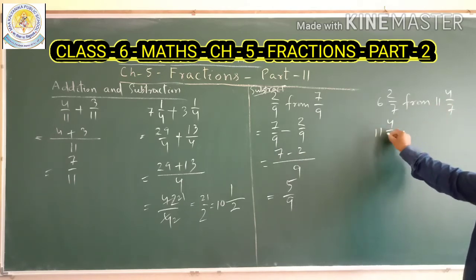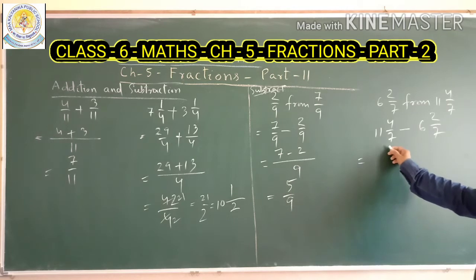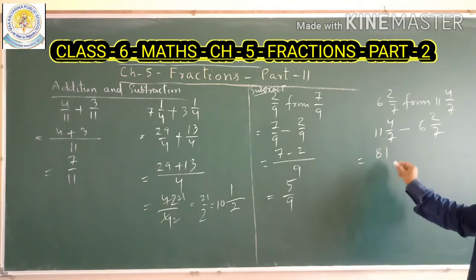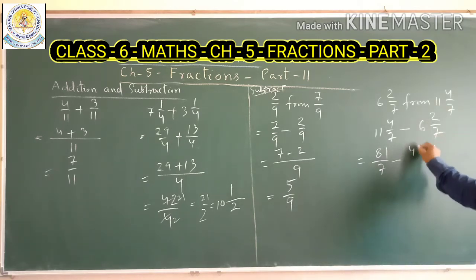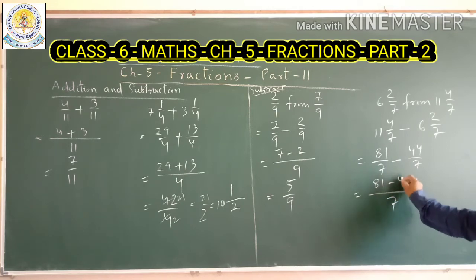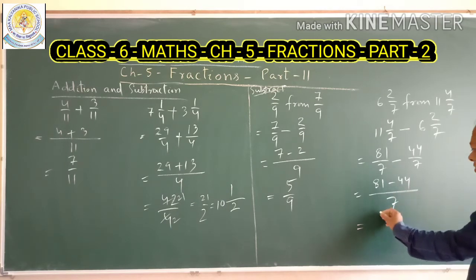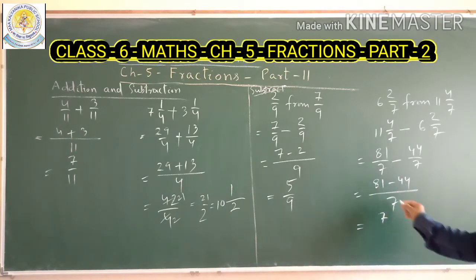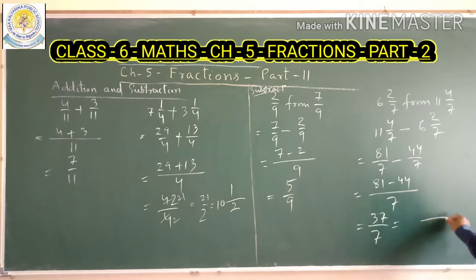Now this subtraction: we subtract 6 and 4 upon 7 from 11 and 4 upon 7. Converting to improper fractions: 11 sevens are 77, plus 4 is 81, giving 81 upon 7. And 6 sevens are 42, plus 4 is 46, giving 46 upon 7. The denominator is the same, so 81 minus 46 gives 35 upon 7. Wait — 81 minus 44 gives 37 upon 7. Make it a mixed fraction: 7 fives are 35, and 37 minus 35 is 2, so the answer is 5 and 2 upon 7.